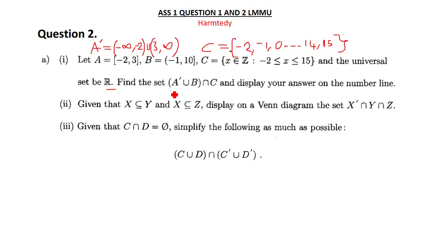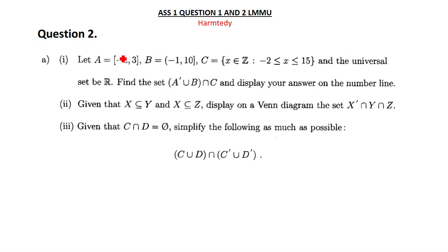To find A complement: A complement is anything that is not in set A. So A complement comes from negative infinity up to negative 2. Then, still writing A complement, we have union from 3 onward.